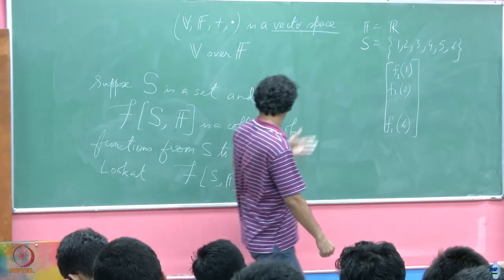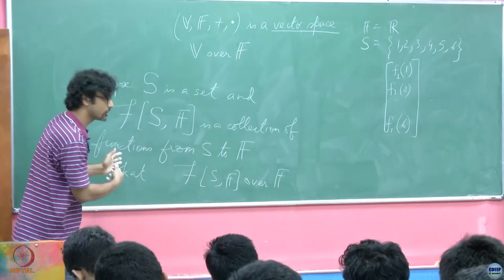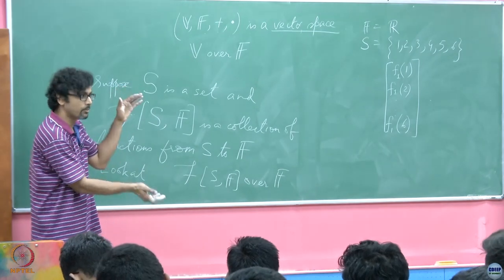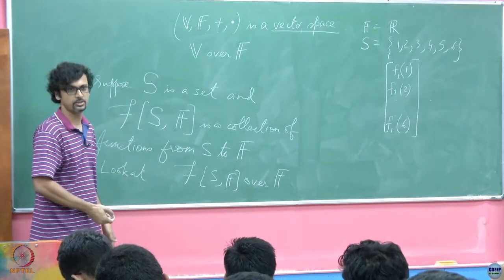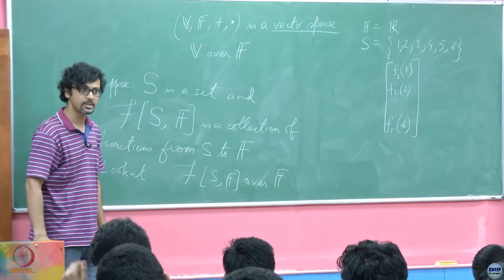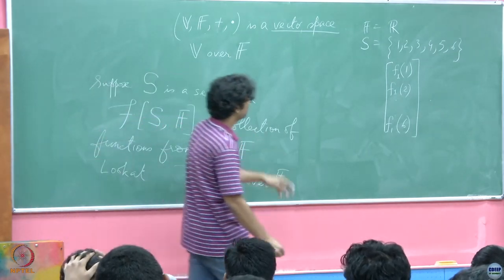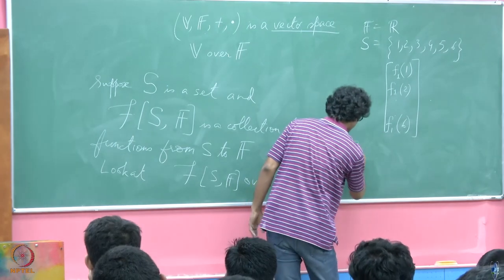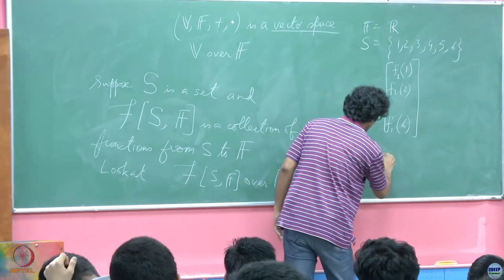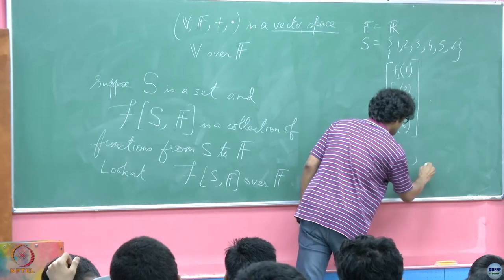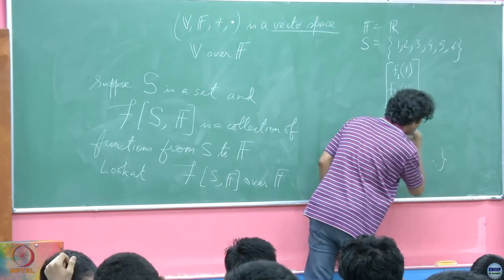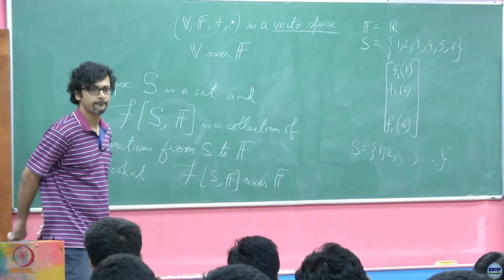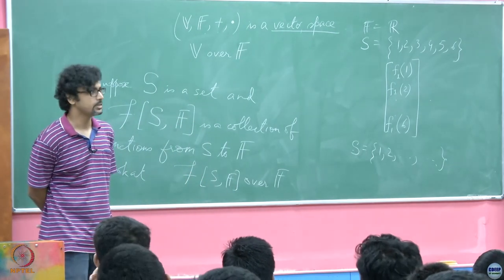So although this looks like it comes from a very different definition, you can immediately associate this with the typical n-tuple of numbers — or in this case a 6-tuple of numbers — that you call vectors in Euclidean spaces. What if I kept F the same but chose S to be 1, 2, and so on through all possible natural numbers? What do you think it becomes then?